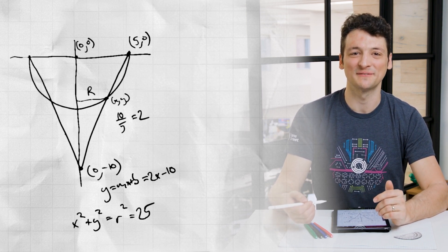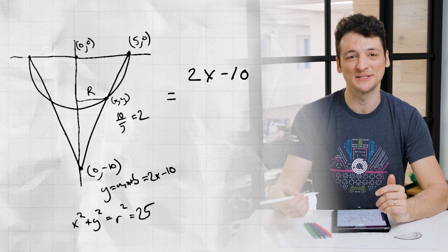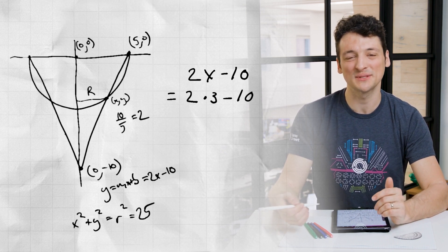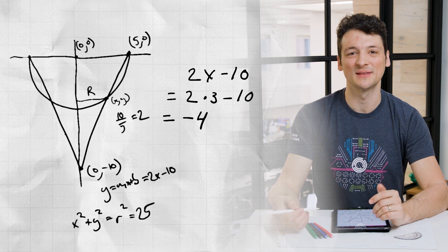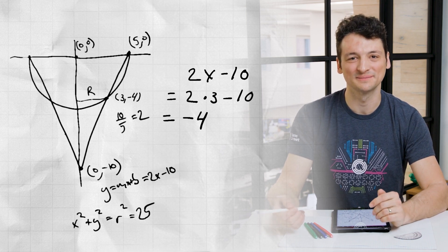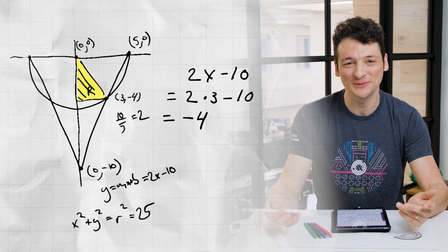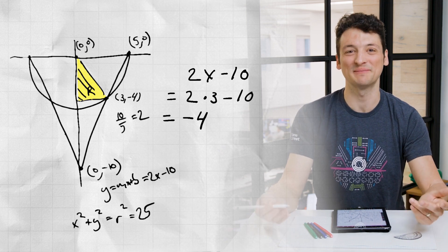We can use the line equation to find that the y coordinate, which is 2x minus 10, is 2 times 3 minus 10, or -4. So this point is (3, -4). Wow, we just found a 3, 4, 5 right triangle out in the wild! An exciting moment!